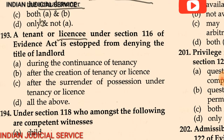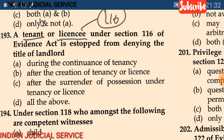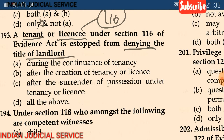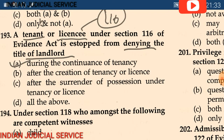Question 193: Under section 116 of the Evidence Act, the tenant or licensee is estopped from denying the title of the landlord — (A) during the continuance of tenancy, (B) after creation of tenancy or license, (C) after surrender of possession under a tenancy or license, (D) all of the above. The answer is option A: during the continuance of tenancy.